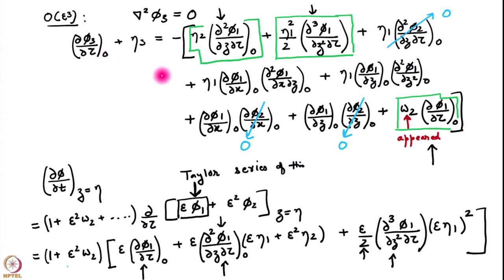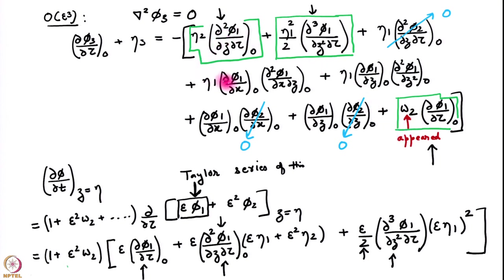We have written the Bernoulli equation boundary condition up to order epsilon cubed. Some of the terms are zero, but even then we are left with 5 terms. We are trying to understand how these boxed terms arise. Once we understand these 3, the other 2 can be understood in a similar manner.